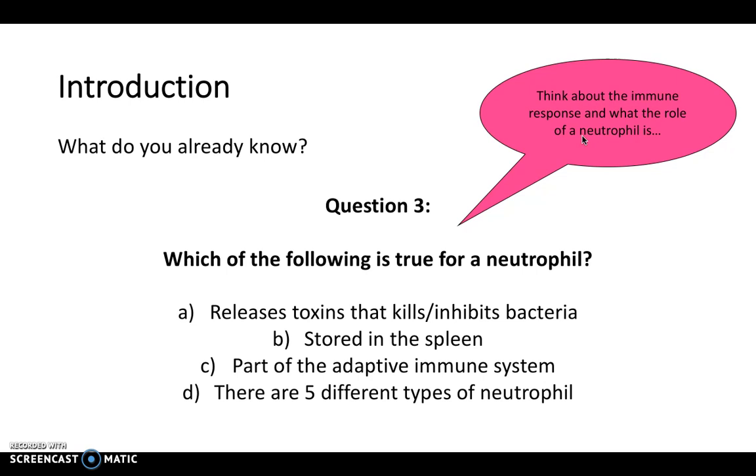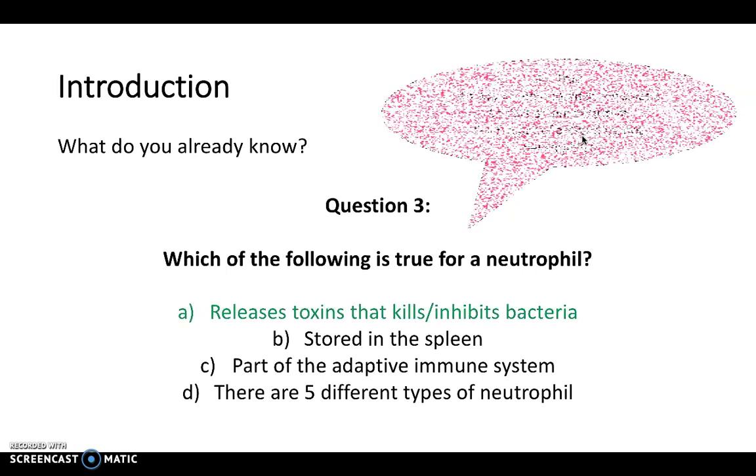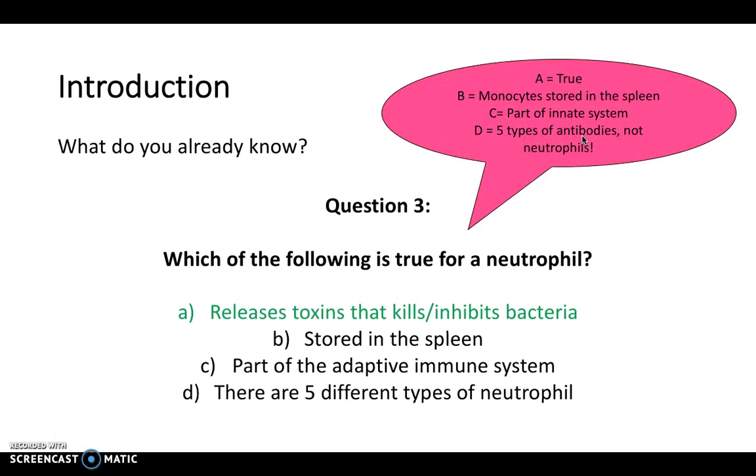So think about the immune response and what the role of a neutrophil is. And the answer is, it releases toxins that kills and inhibits bacteria. If you look at the other answers, you can see why they're incorrect by looking at this pink bubble up in the top right-hand corner.